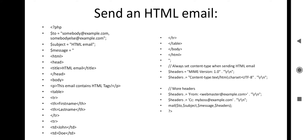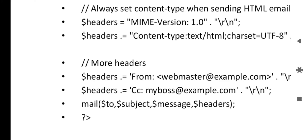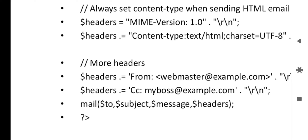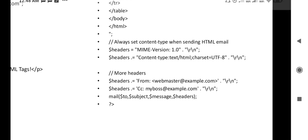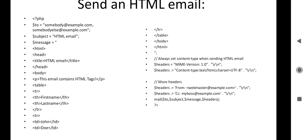After defining the message, always set the content type when sending an HTML email. Set the headers: $headers = 'MIME-Version: 1.0', then Content-Type with the character set. While sending an email message, you can specify the MIME version, content type, and character set — you need to write all three. You can also include additional headers like From and CC. Finally, send the data using the mail() function: mail($to, $subject, $message, $headers).